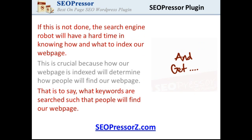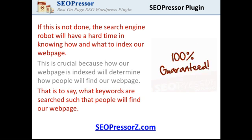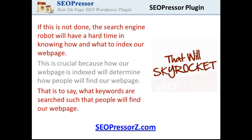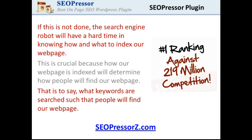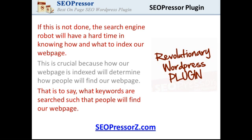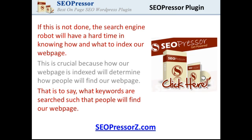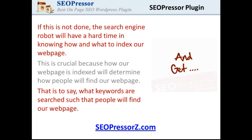Now, if this is not done, the search engine robot will find it hard to know how to classify, categorize, or where to put your post or webpage. This is important and crucial because how our webpage is indexed will determine how people will find it — that is, what keywords people search to find our webpage. We need to tell the search engine robot what keywords to index our page or post as.